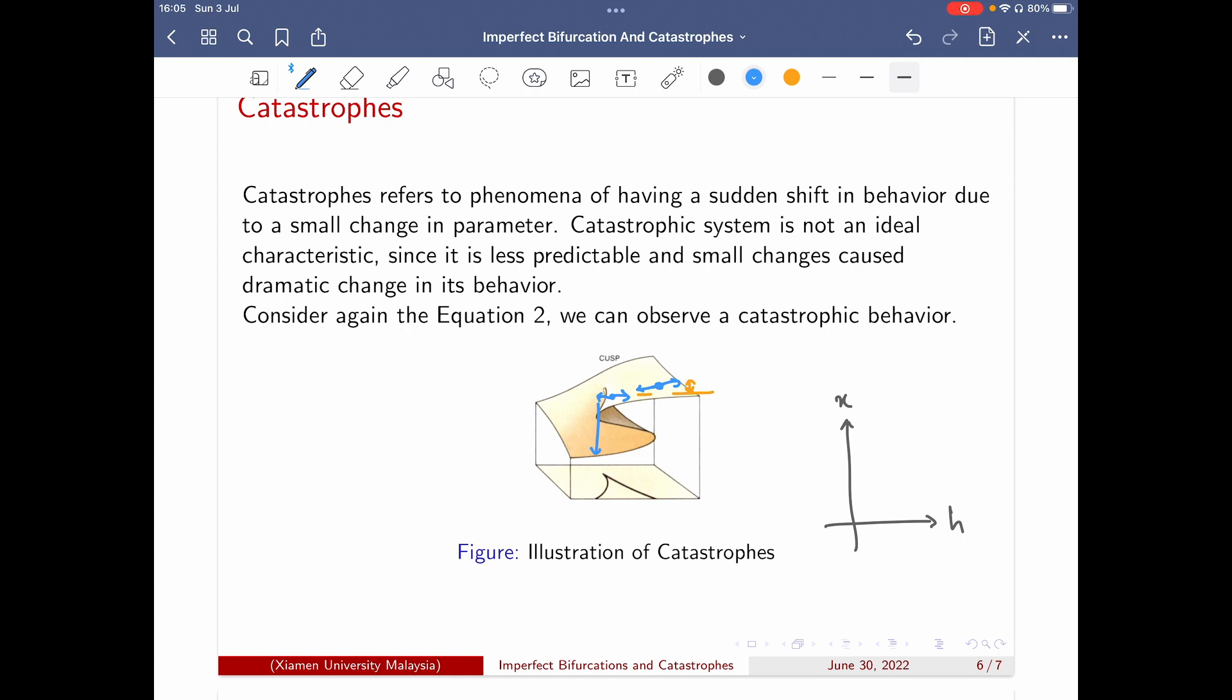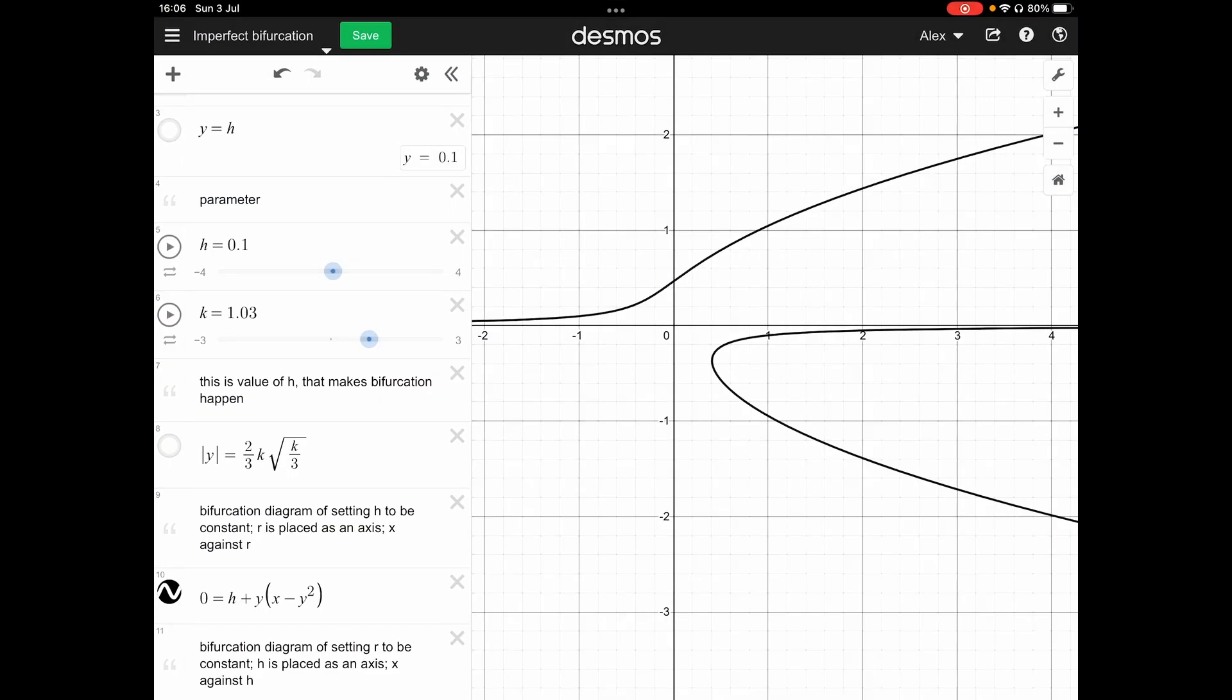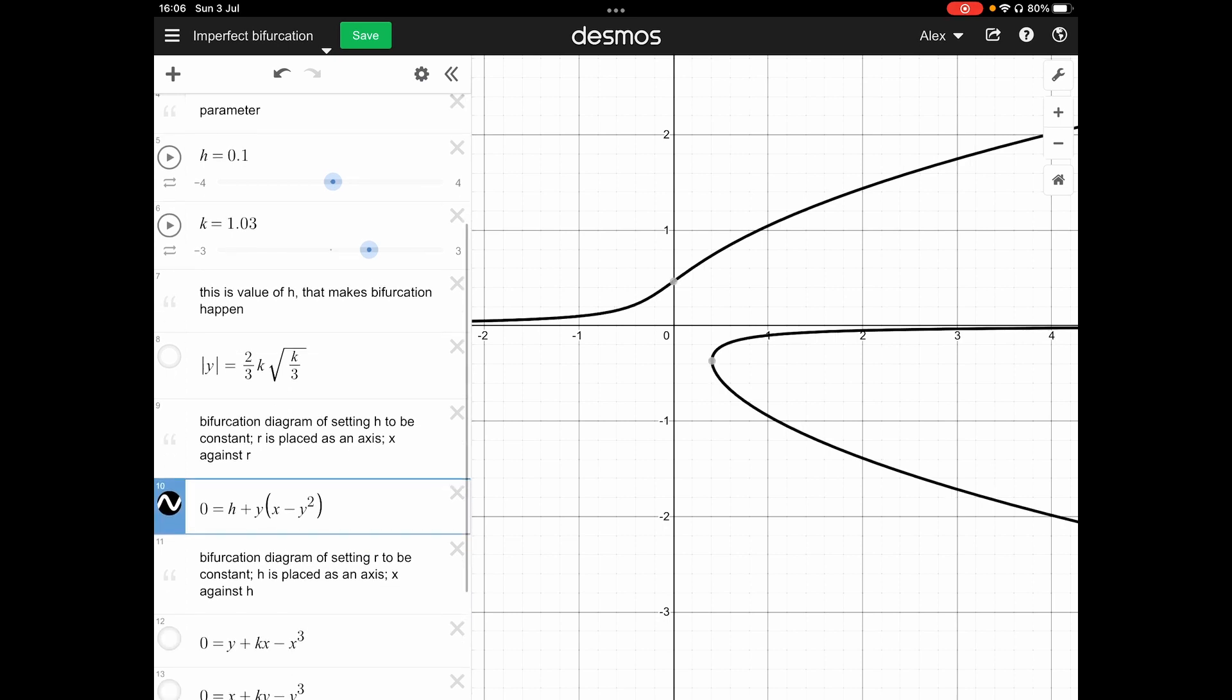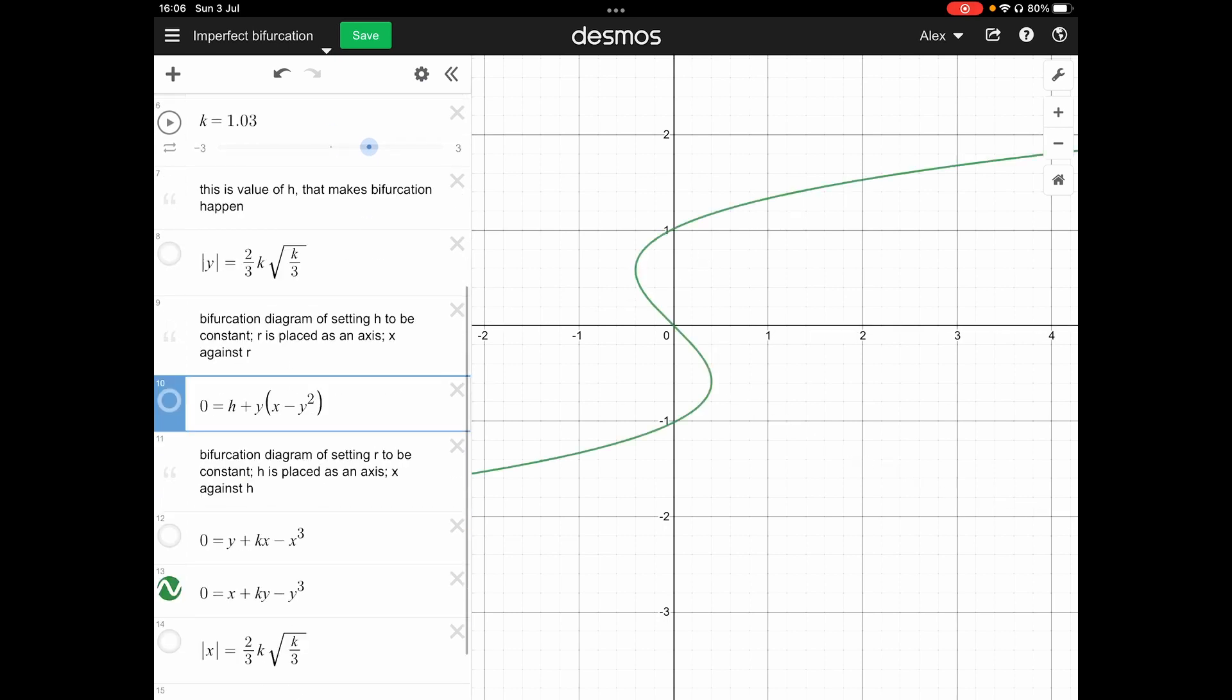But we are changing the axis again. We are now plotting the graph to be an x-axis, so h x-axis, x against h. So let me change the graph. Okay, here, x against h.